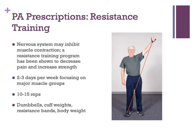A resistance that allows completion of at least one set of 10 to 15 reps in a controlled manner is a good start and adequate for attaining strength benefits. If a person is exercising at home, they can consider using dumbbells, cuff weights, or resistance bands. If those aren't available, simply use body weight.